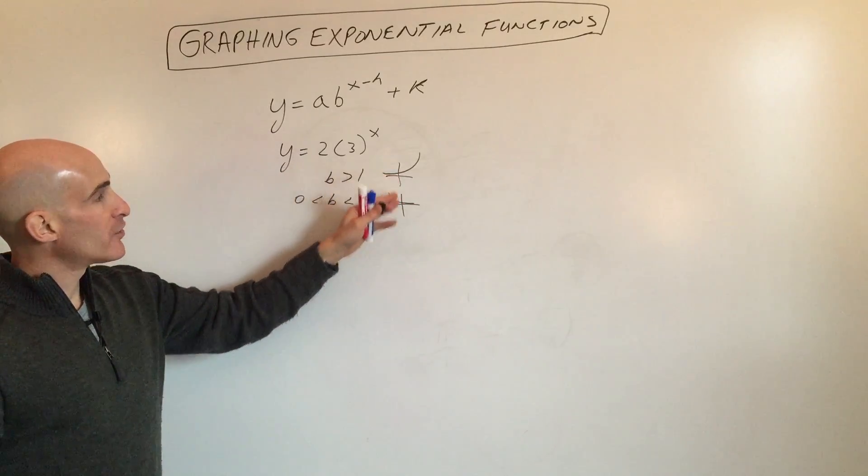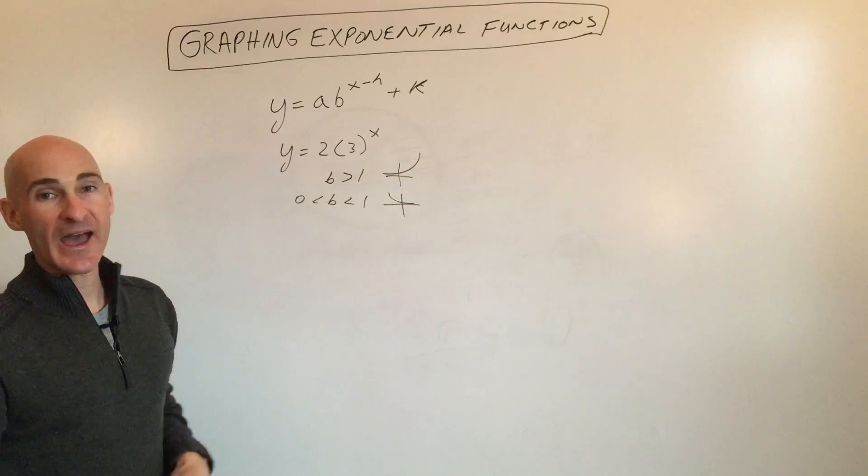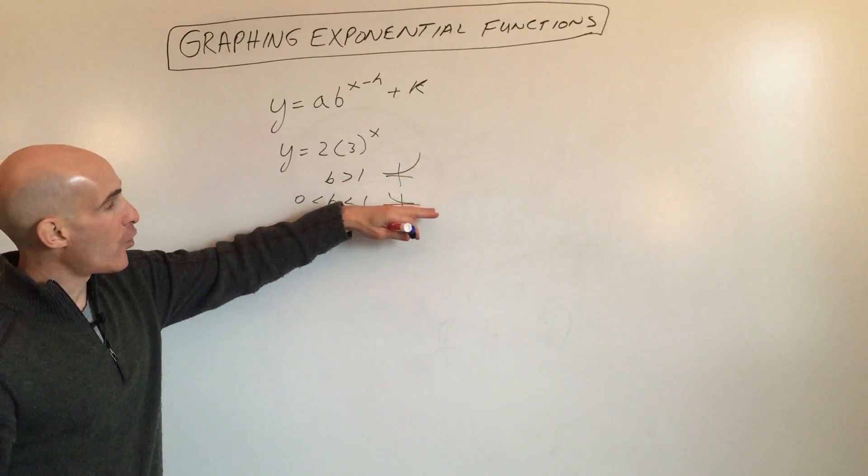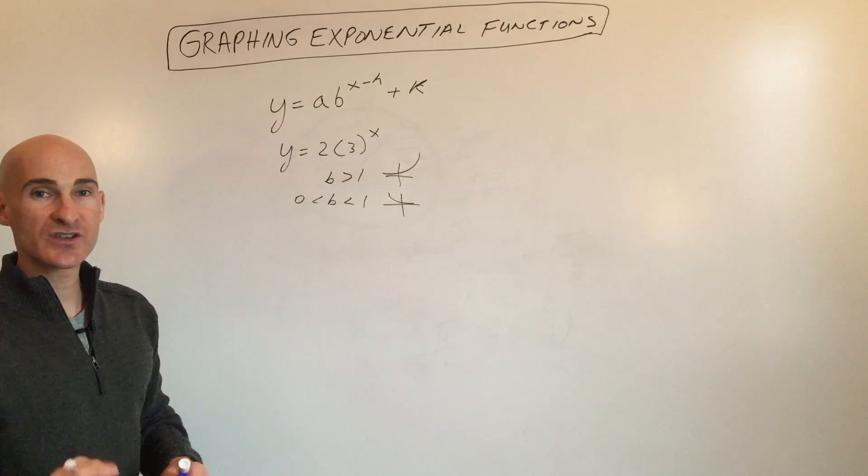What you'll notice in both of these sketches is that the graph gets closer and closer to the x-axis. That's the horizontal asymptote. The asymptote is a line it gets closer and closer to but doesn't cross.